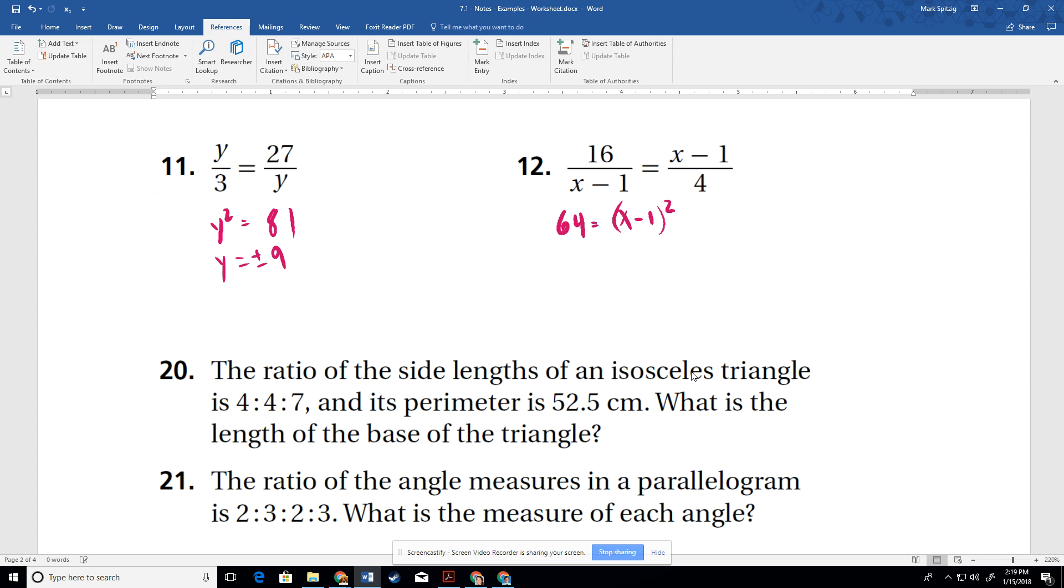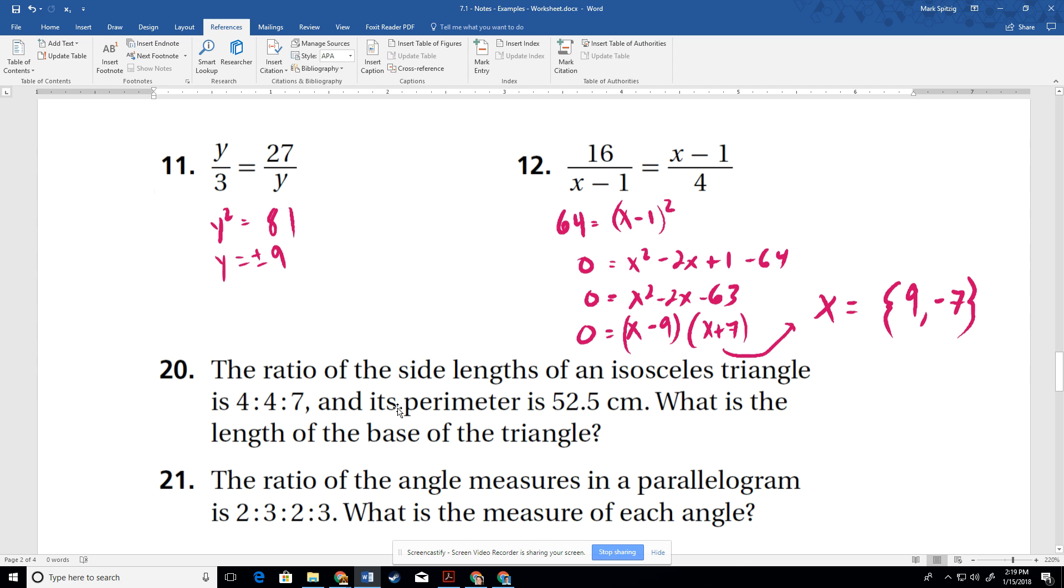I'll multiply it out. And so we get, it's basically (x minus 1) times (x minus 1). So we get x squared minus 2x plus 1. And then we're going to subtract 64 because we need to get this to 0. So x squared minus 2x minus 63. Well, two things that multiply to get to 63, 9 and 7, which is good because those are two apart. So we know it's going to be (x minus 9)(x plus 7). And so our two values, x equals both 9, positive 9 and negative 7, which are both fine in this case.